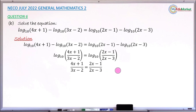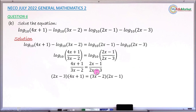To solve this equation, the first step is to cross multiply. Cross multiplying gives: (2x - 3) times (4x + 1) on the left equals (3x - 2) times (2x - 1) on the right.